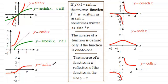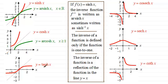Moving on to y equals tanh x — recall that it has asymptotes at y equals minus one and y equals one. This graph is already one-to-one: for any value of y there is exactly one corresponding value of x, whether y is positive or negative. So all we need to do is draw the line y equals x and reflect the graph of y equals tanh x in that line.